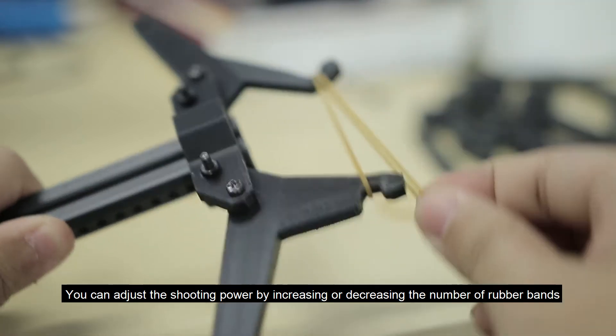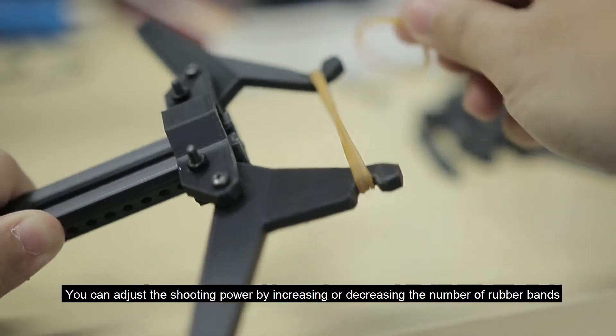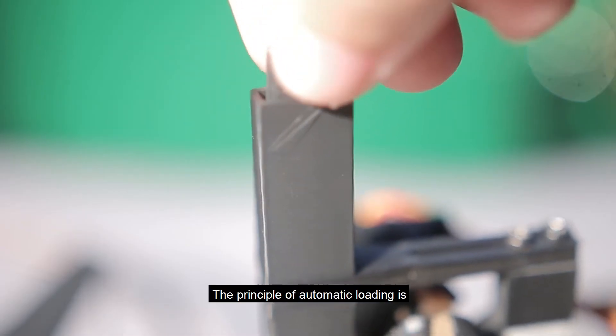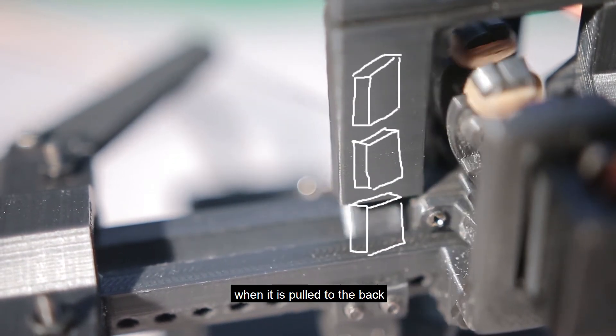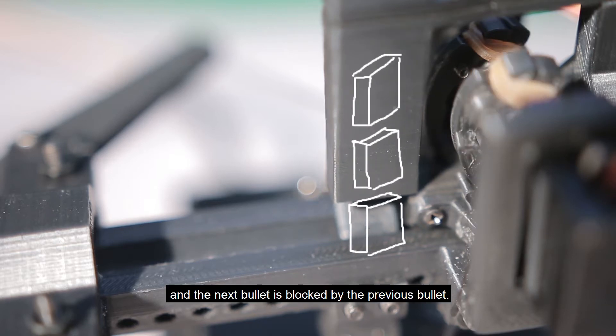We can adjust the shooting power by increasing or decreasing the number of rubber bands in the front of the crossbow. The principle of automatic loading is the slider blocks the bullet in the magazine. When it is pulled to the back, a bullet falls and the next bullet is blocked by the previous bullet.